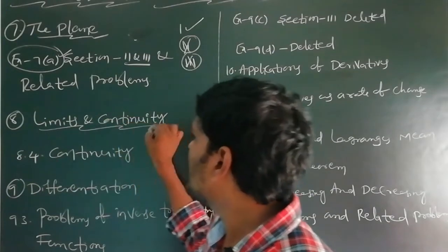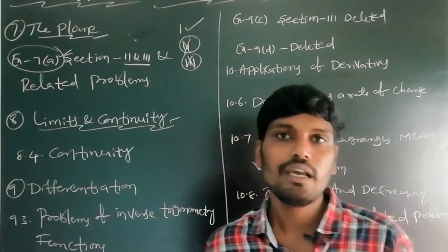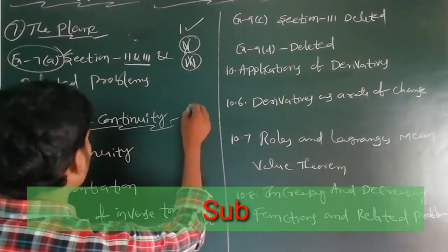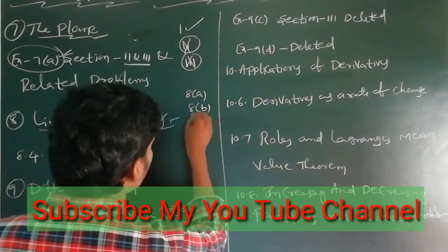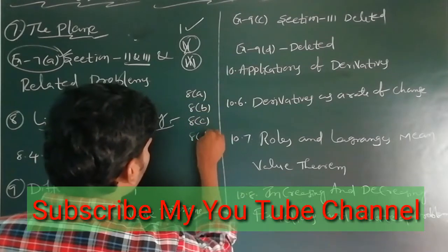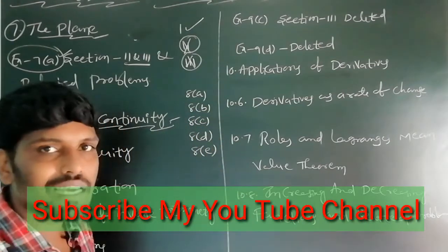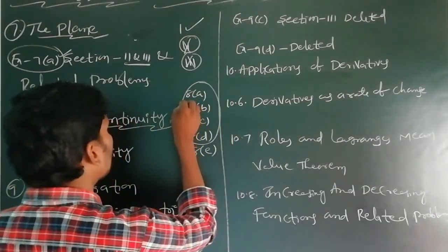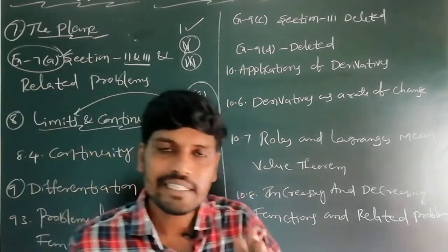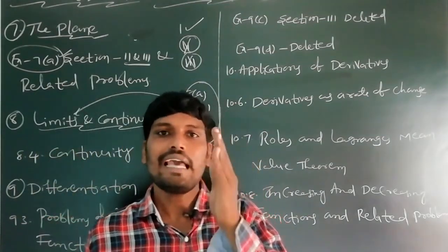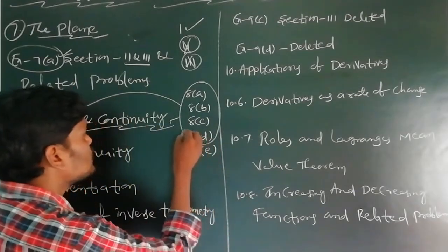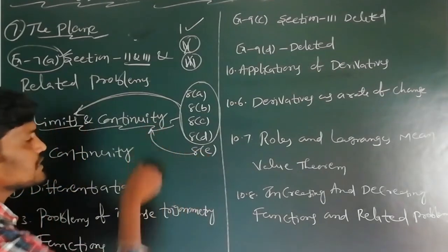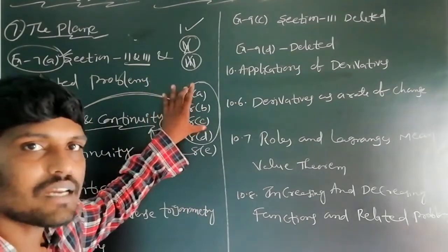After that, the next chapter is Limits and Continuity. This chapter has a total of 5 exercises: Exercise 8a, Exercise 8b, Exercise 8c, Exercise 8d, and Exercise 8e. The first 4 exercises — 8a, 8b, 8c, 8d — belong to limits. The last exercise, 8e, belongs to continuity.